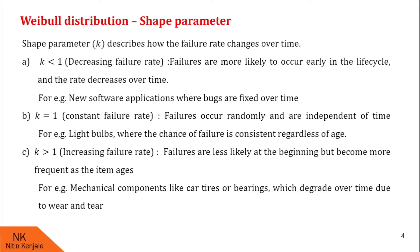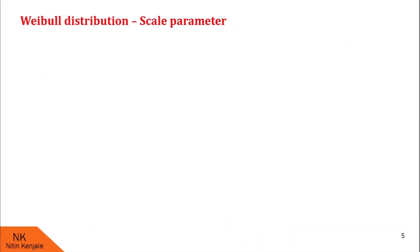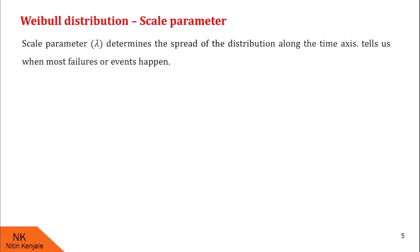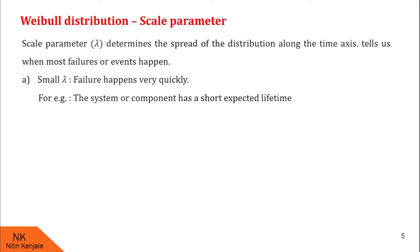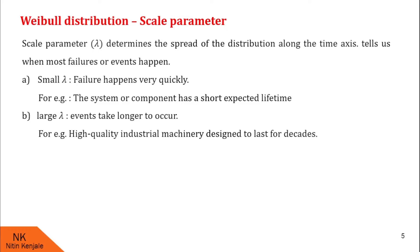Now we proceed to the scale parameter. The scale parameter, usually denoted by lambda, determines the spread of the distribution along the time axis. It tells us when the most failures or events happen. If the scale parameter is small, then failure happens very quickly — for example, a system or component with a short expected lifetime. If the scale parameter is large, then the event takes longer to occur — for example, high-quality industrial machinery designed to last for decades.